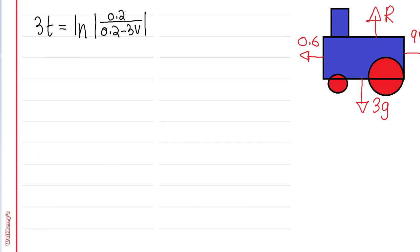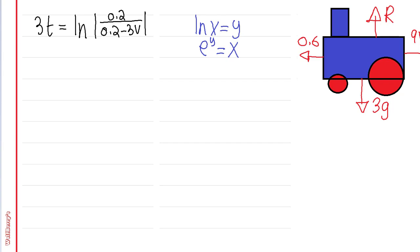Part c says find v as a function of time and sketch the function — basically, make v the subject. Going back to our equation (multiplying both sides by 3 to return to 3t = ln(0.2 / (0.2 minus 3V))), the rule we use is: if ln(x) = y, then e^y = x. Applying this rule, e^(3t) = 0.2 / (0.2 minus 3V), removing the ln.